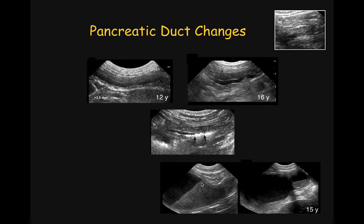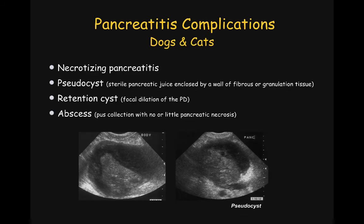In some instances, pancreatitis in dogs or cats can be associated with complications. These vary from necrotizing pancreatitis, which is an autodigestion of the pancreas by itself due to severe inflammation; pseudocyst, which is a collection of sterile pancreatic juice enclosed by a wall of fibrous or granulation tissue; retention cysts, which can be congenital or acquired and result in the focal dilation of the pancreatic duct; or finally pancreatic abscess, which is a pus collection with no or very little pancreatic necrosis.